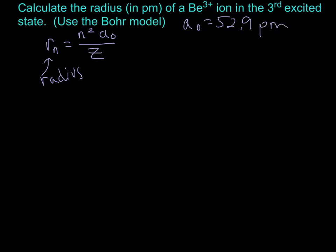We have a beryllium 3+ ion, so that's a one-electron ion, so we're allowed to use the Bohr model. What is Z for beryllium? Z for beryllium is 4. Now we're ready to do the calculations.